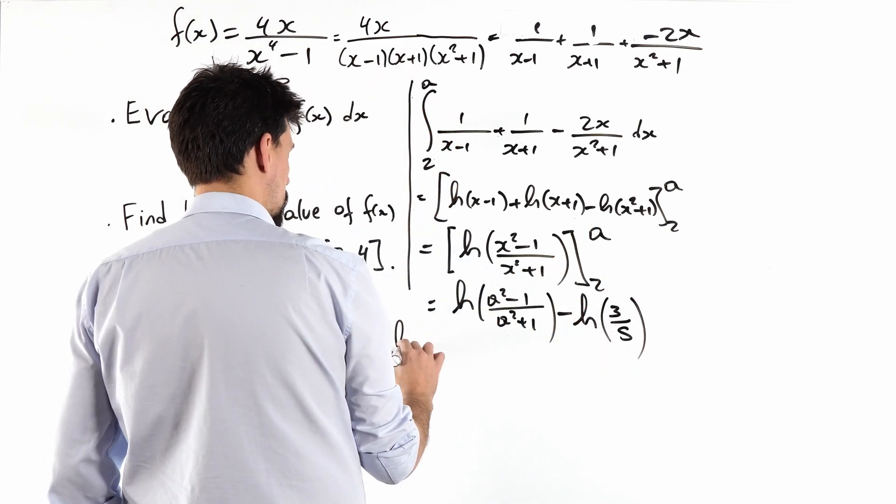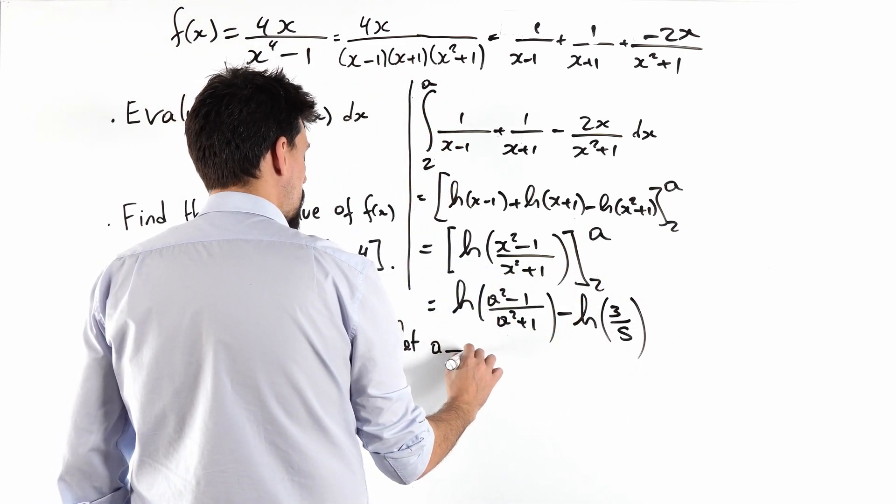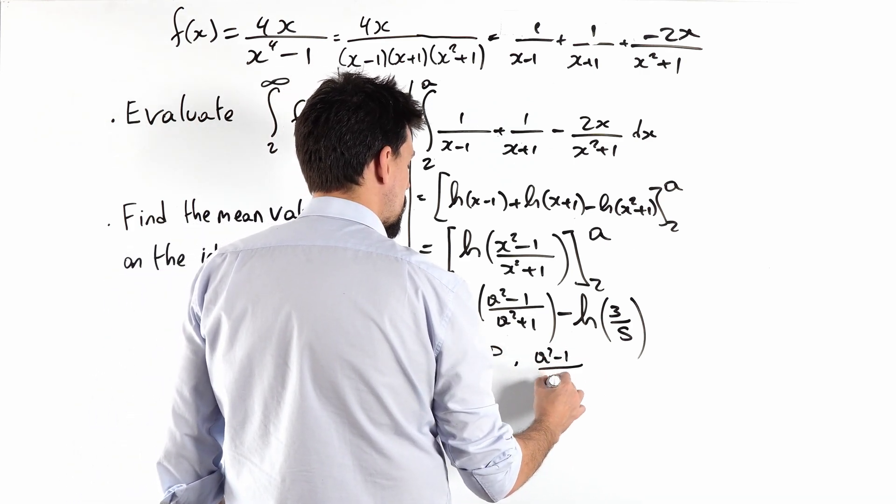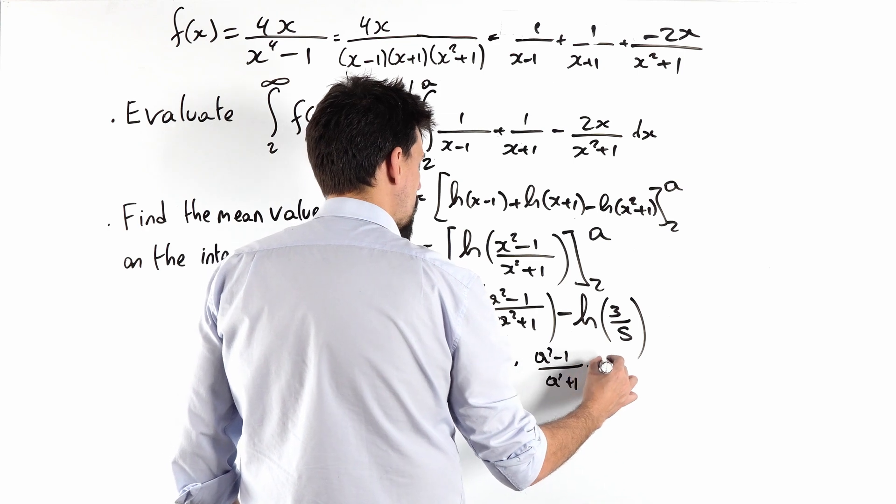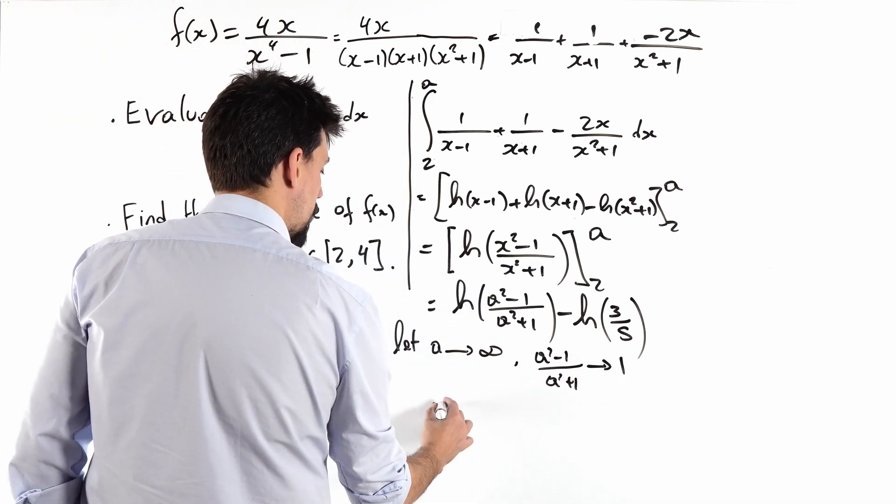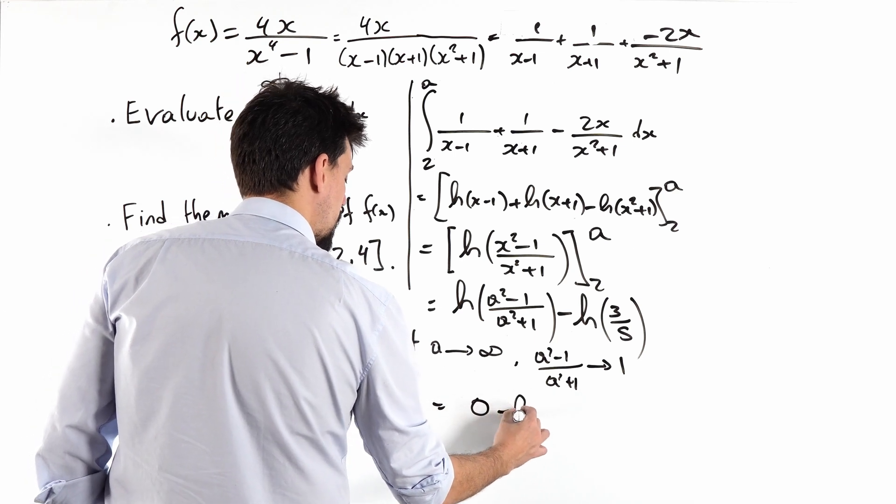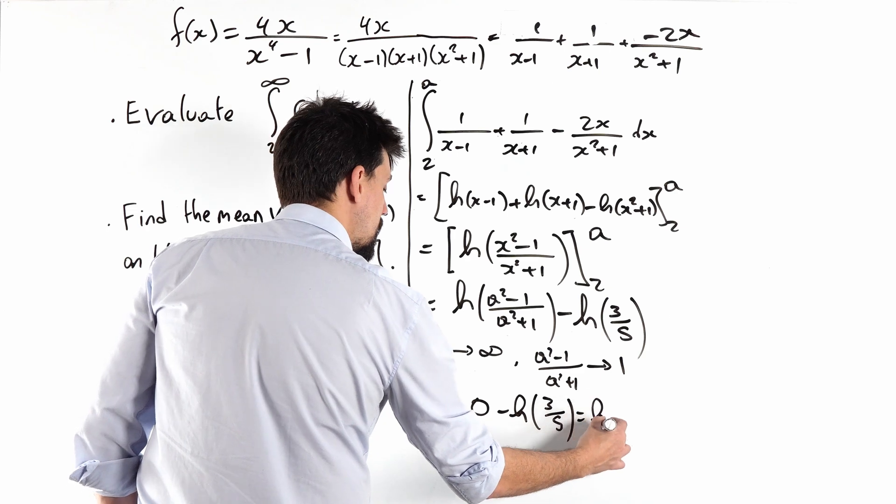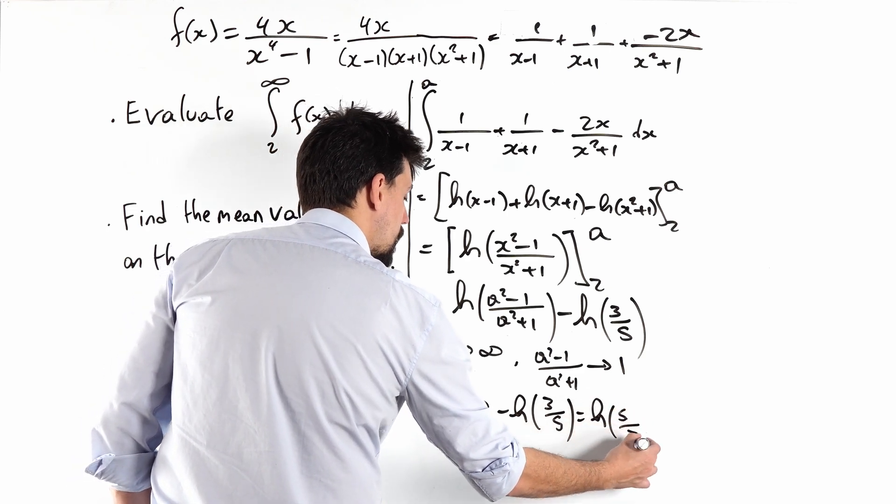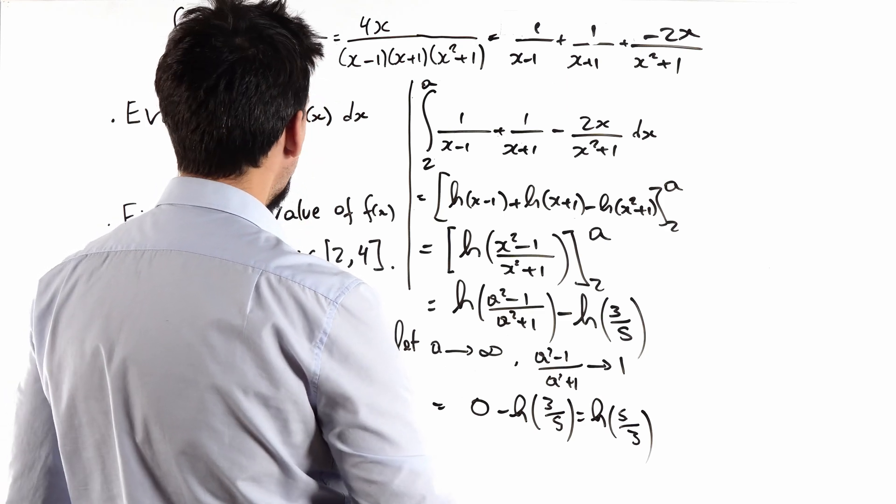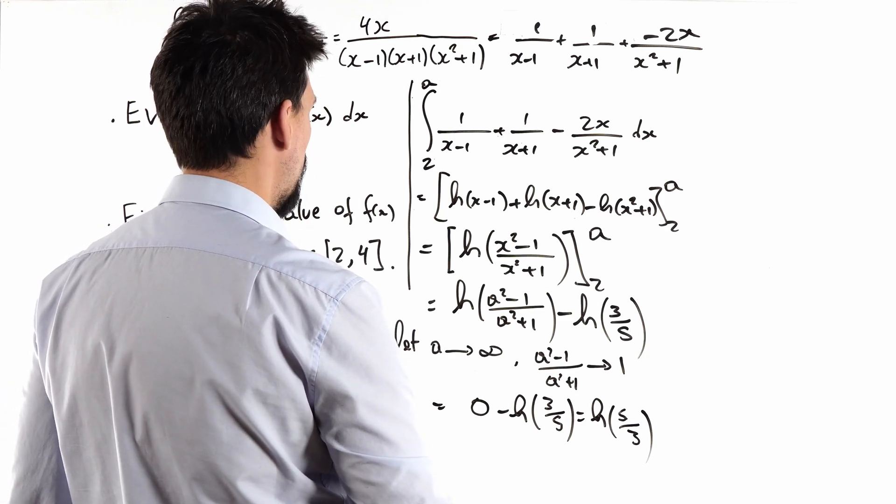And now we're going to let a tend to infinity, and at that point, a squared minus 1 over a squared plus 1 is going to tend to 1. And ln is of course 0 minus ln of 3 over 5, which is ln of 5 over 3. Boom. Love it.